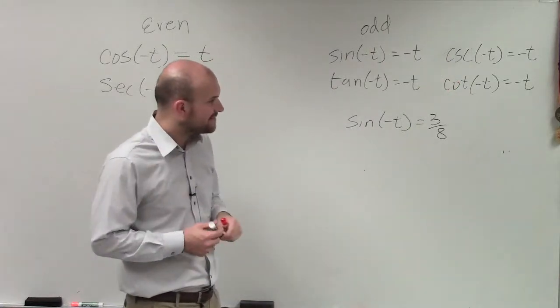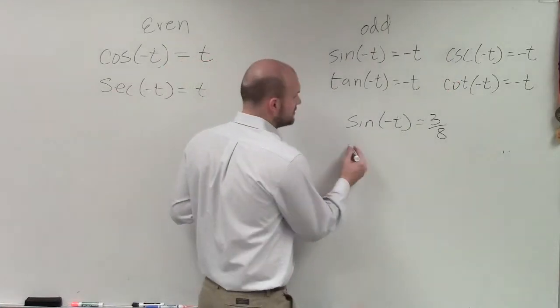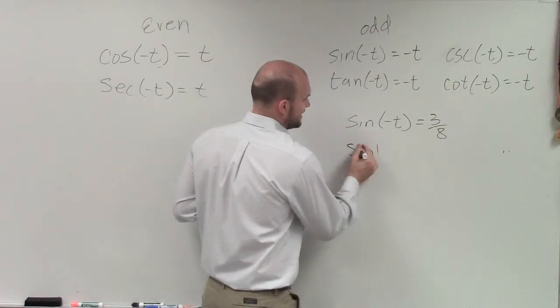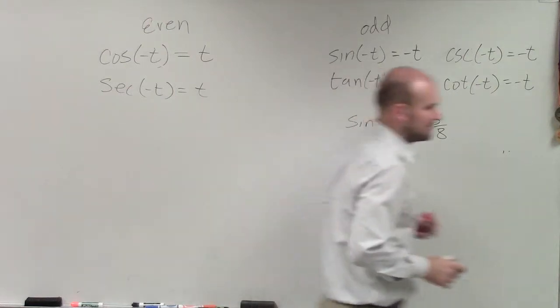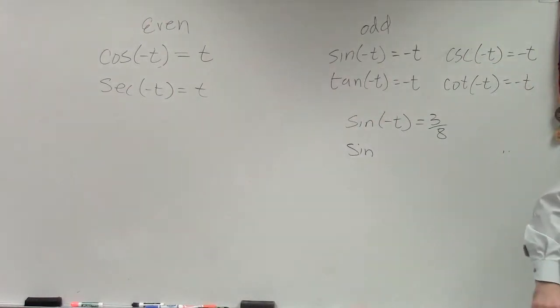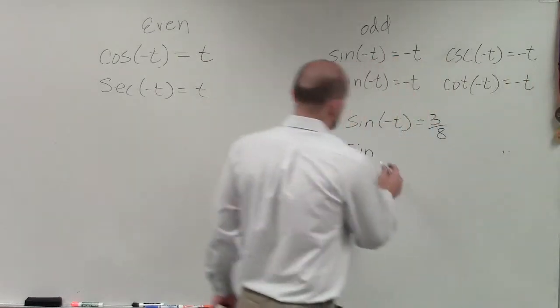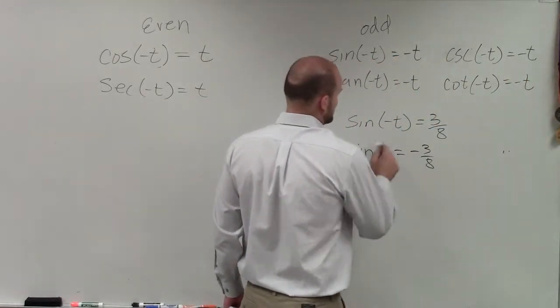So if they say sine of negative t equals 3/8, then therefore—what do we have? What are they asking us for? Find sine of t. So sine of t equals negative 3/8.